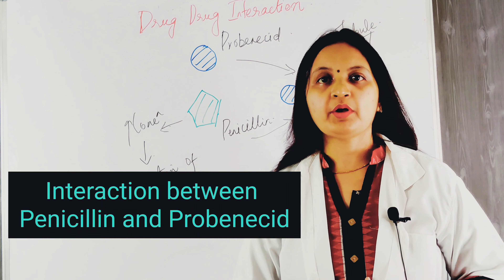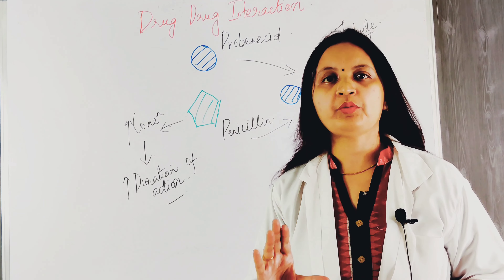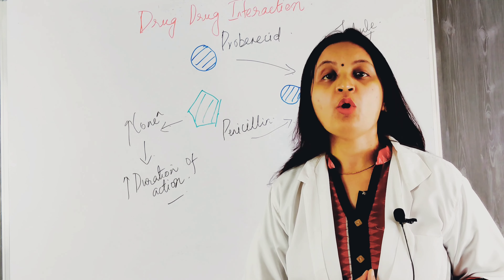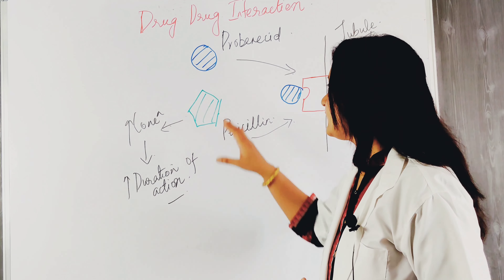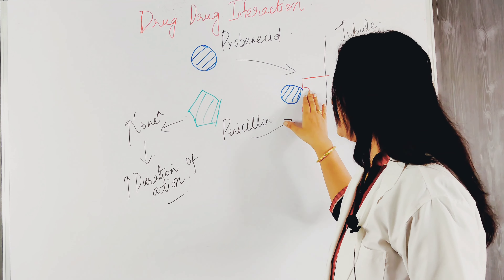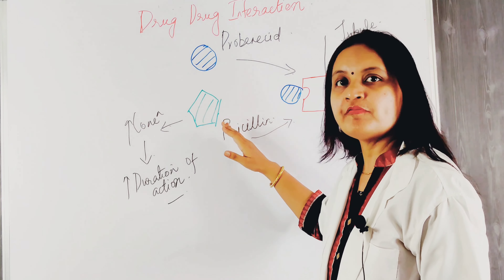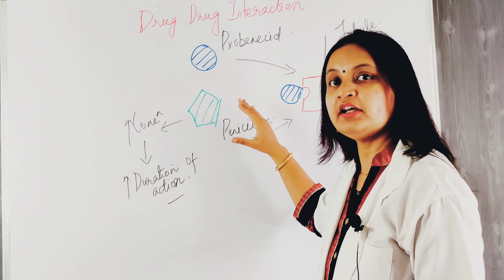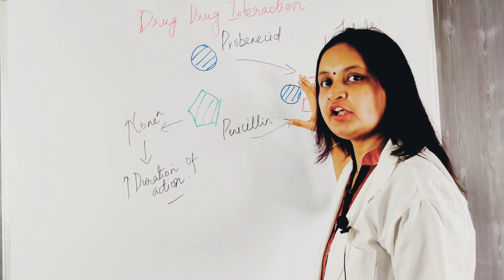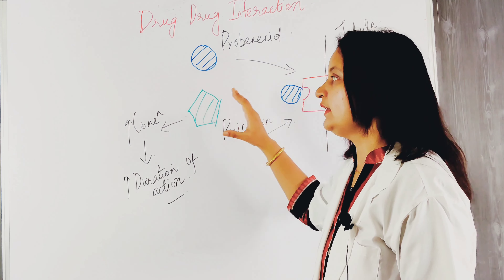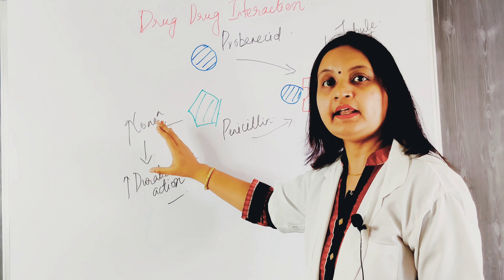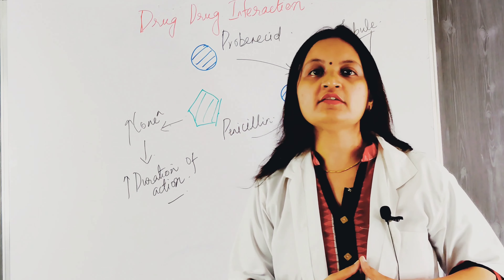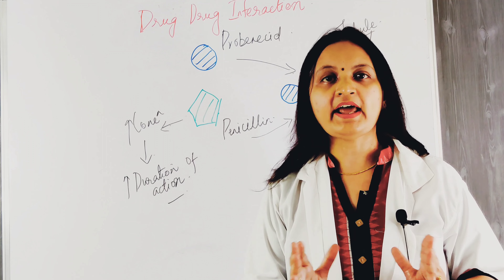The next example of drug-drug interaction is between penicillin and probenecid. Both are excreted through the kidney by tubular secretion with the help of transporters. Probenecid, having greater affinity for the transporter, prevents penicillin from interacting with the transporter, thereby inhibiting the excretion of penicillin. This increases the concentration of penicillin in the plasma and prolongs the duration of action of the drug.